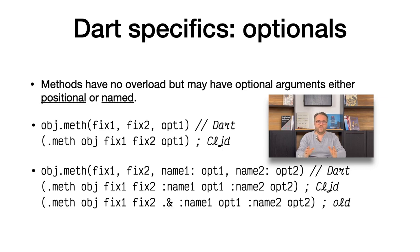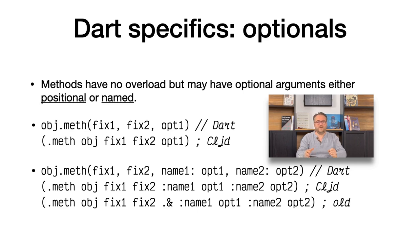Let's cover some specifics about ClojureDart. The first thing is optionals. In Dart, a method can only have one signature — there are no overloads for a given method, but it can have some optional parameters, either positional or named. For a long time we had a special syntax for the named parameters, using that to tell the compiler where the named parameters were starting. We don't need it anymore because we have the static information needed to know how many fixed parameters are expected. You are just going to write what seems the more natural keywords to denote the name of the parameters and that's all.